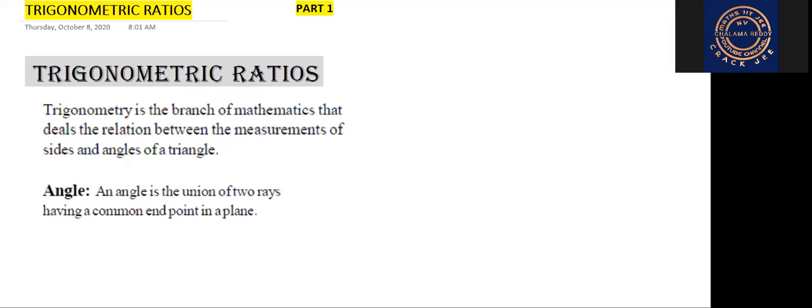So what is Trigonometry? Trigonometry came from two Greek words: Trigonon and Metron. Trigonometry is a branch of mathematics that deals with the relation between the measurements of sides and angles of a triangle.